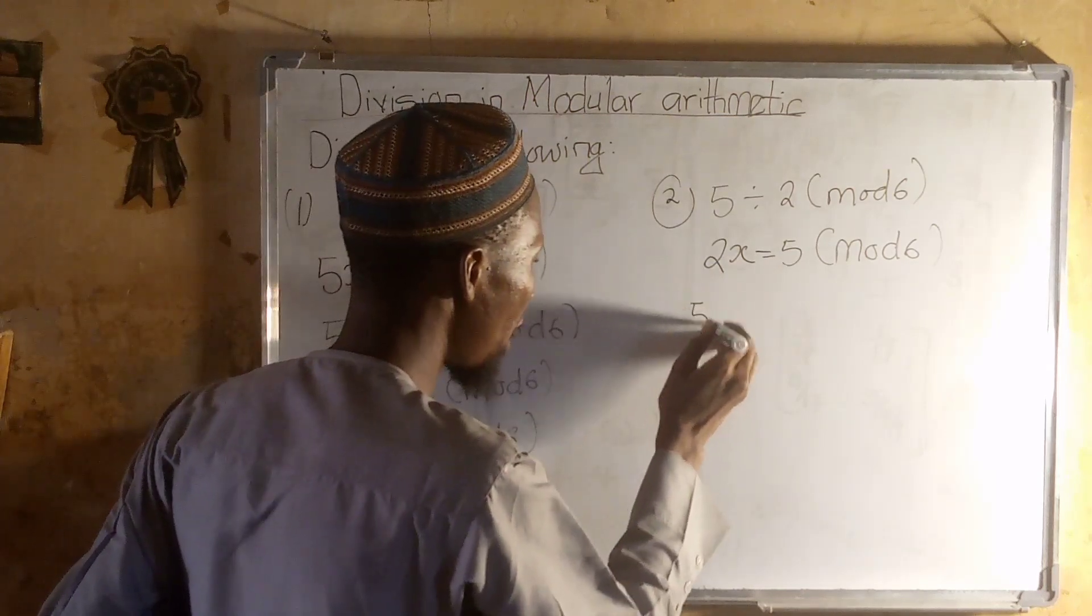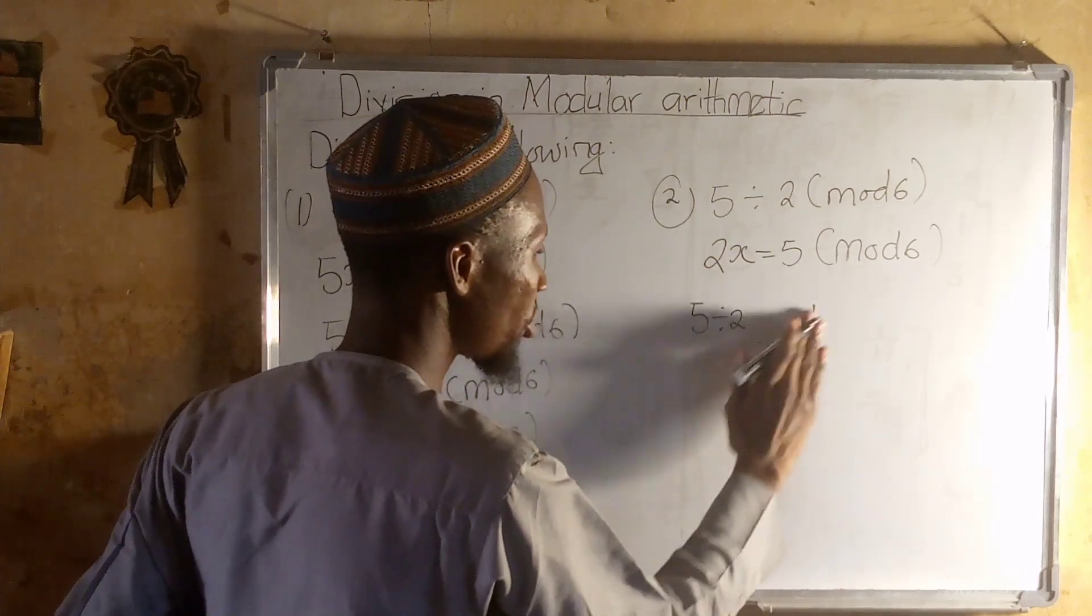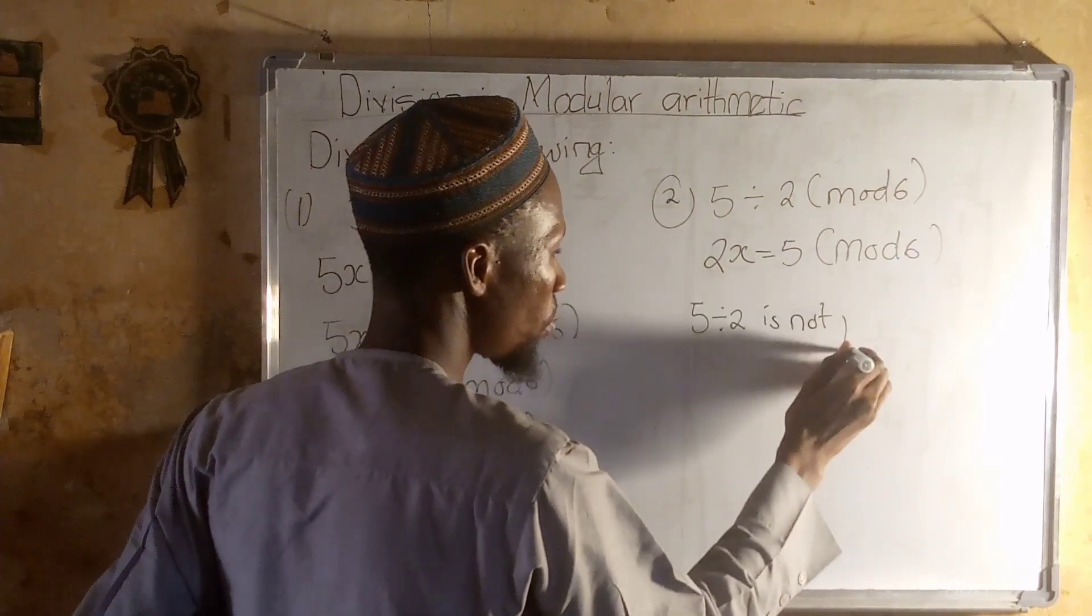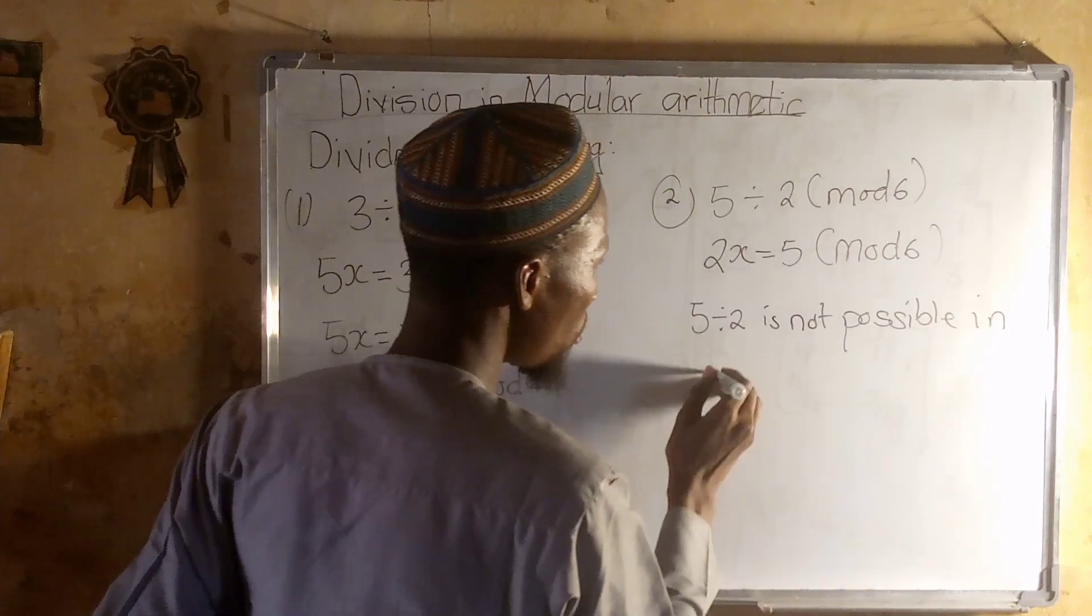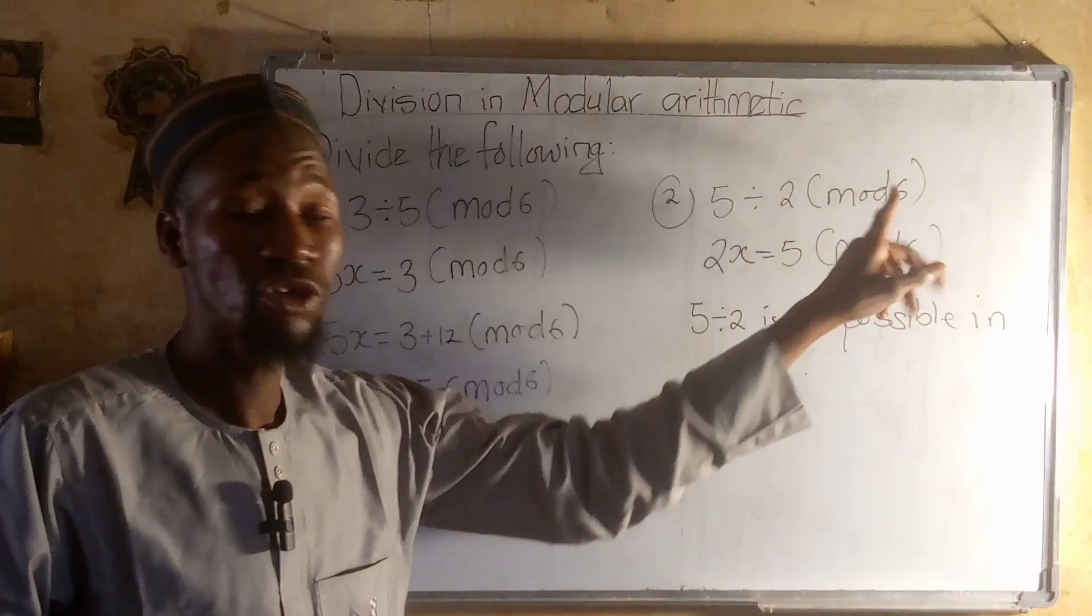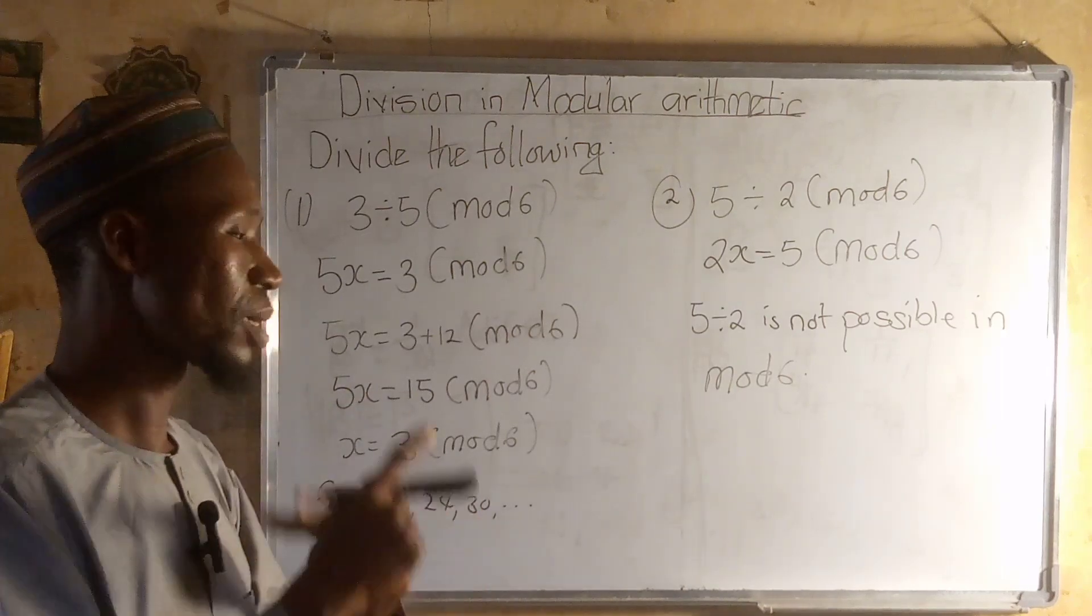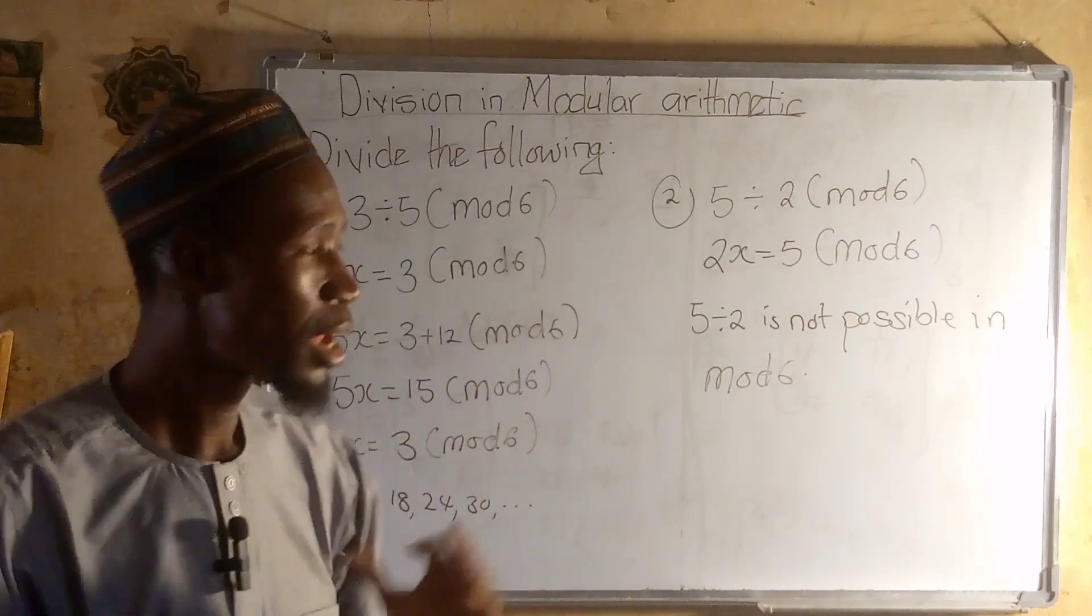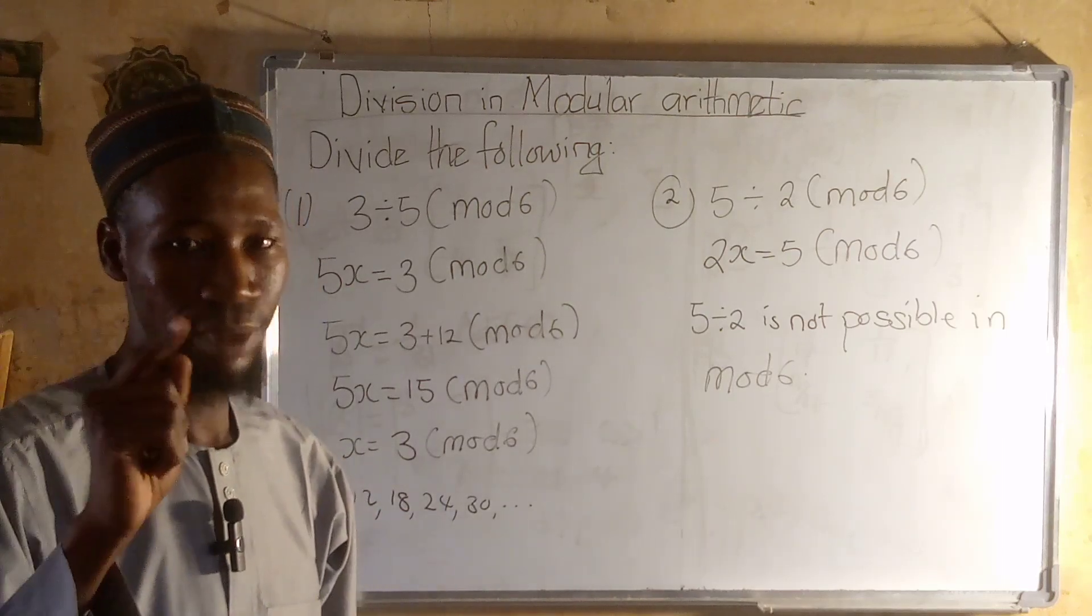5 divided by 2 mod 6 is not possible. Five divided by two mod six is not possible in mod 6. This is because in mod 6, you cannot divide and get an answer that satisfies the equation. That's modular arithmetic. If you like this video, please subscribe.